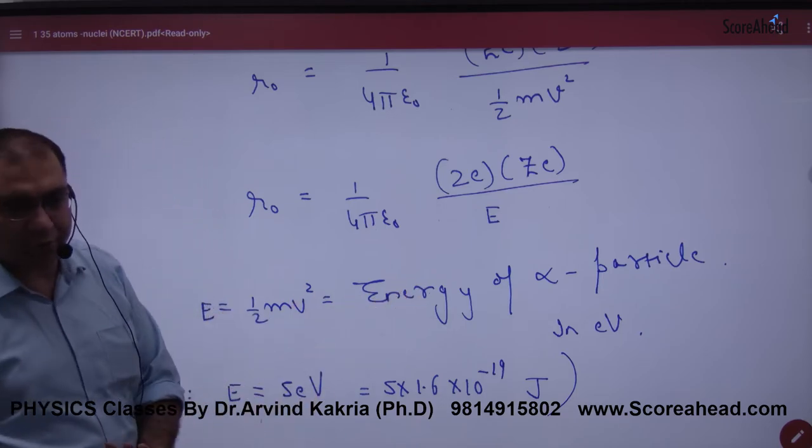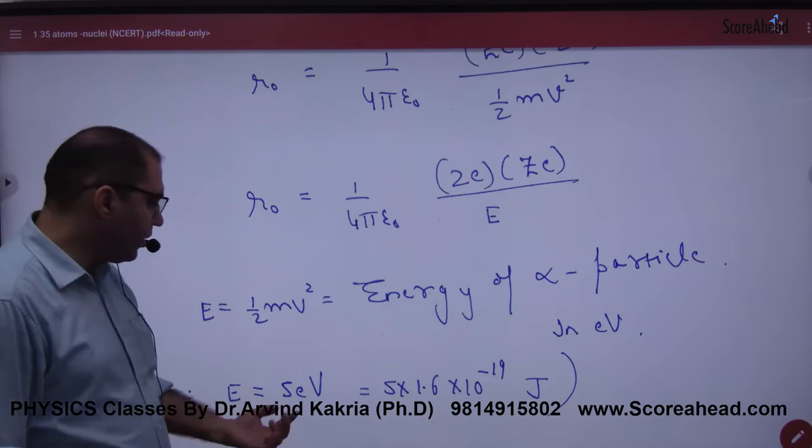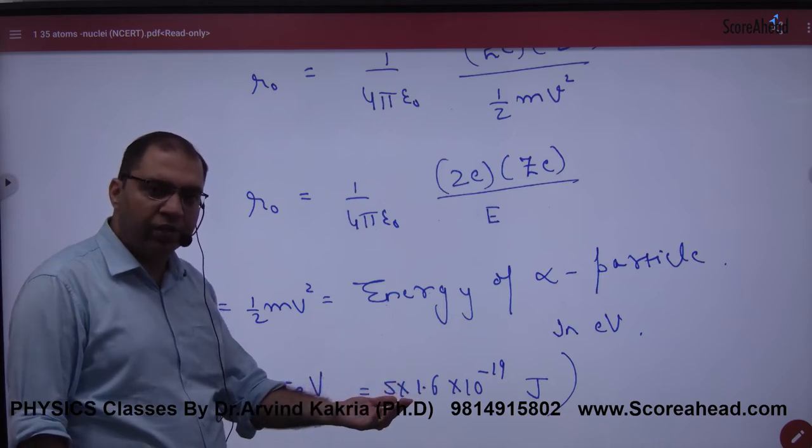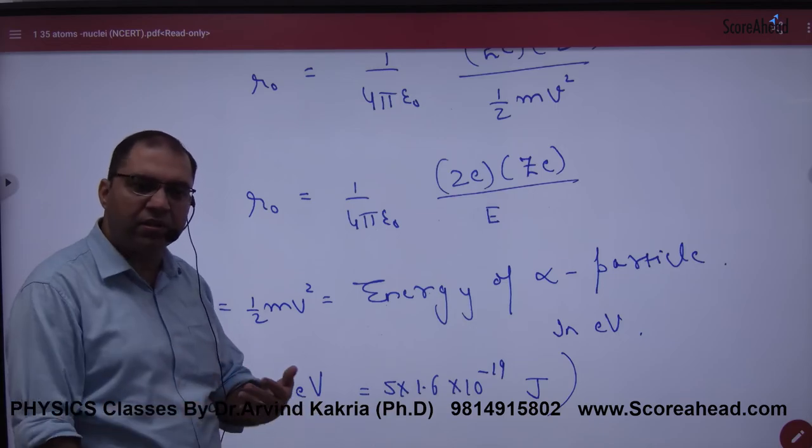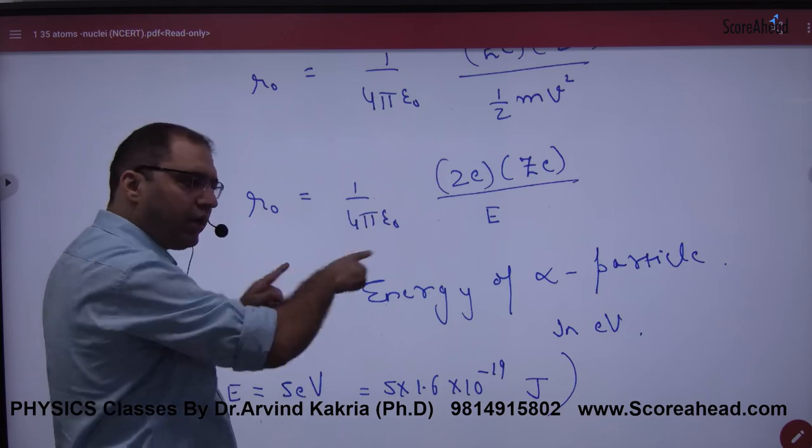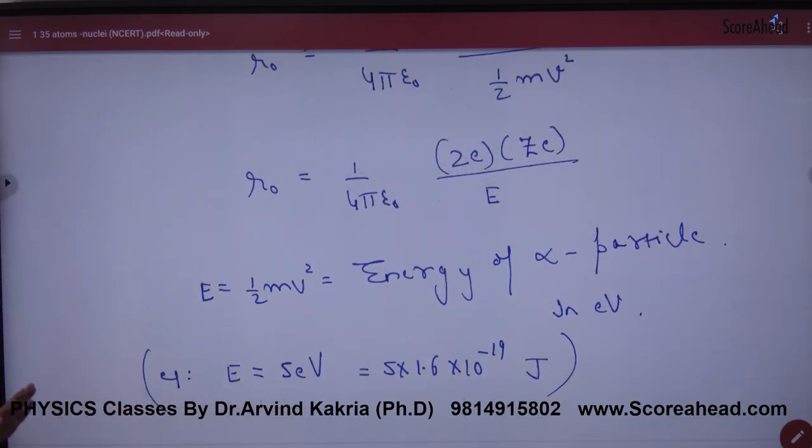Electron volt is given. How do we convert electron volt to joule? Like if energy is 5 electron volt and you have to convert it in joule, 1.6 into 10 to the power minus 19, what do we do? Multiply. So answer which will come in joule. This is the way. But this formula is clear. This is the formula for distance of closest approach.